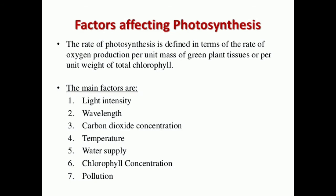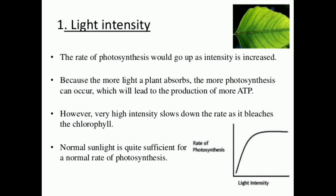The rate of photosynthesis is affected by light wavelength, carbon dioxide concentration, temperature, water supply, chlorophyll concentration, and pollution. The most important factor is light intensity. The rate of photosynthesis increases as light intensity increases because the more light a plant absorbs, the more photosynthesis can occur, leading to more ATP production. However, very high intensity slows down the rate as it bleaches the chlorophyll. Normal sunlight is quite sufficient, and red light is most beneficial for photosynthesis.